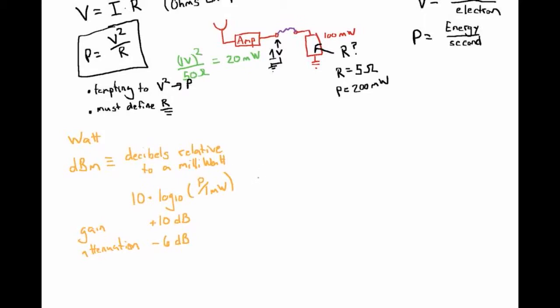So for example, if you start off with a signal that is zero dBm, now zero dBm means that log base 10 of P over one milliwatt is zero, which means that P is one milliwatt. So we start with a one milliwatt signal, zero dBm. We go through a gain stage of plus 10 dB, we'll end up with a 10 dBm signal. And if we then go through an attenuator stage where we subtract off 6 dB, we'll end up with a 4 dBm signal.